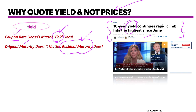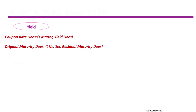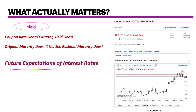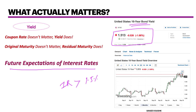If the prices don't really matter much, the coupon rate doesn't matter much, and the original maturity doesn't matter much, then what actually matters is the future expectation of interest rates. There is a reason why a particular yield is not acceptable to people — it's the future expectation of interest rates. They are hoping that at some stage they will be able to get interest rates greater than 1.5% on a 10-year bond yield, and in order to lock in that higher yield, they start selling bonds and pushing the yield higher.